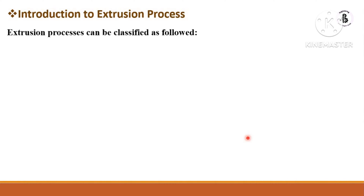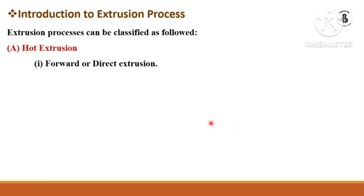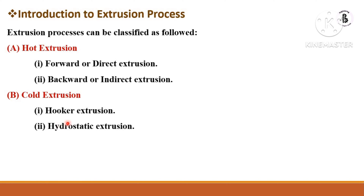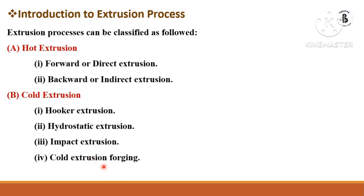The extrusion process is classified into two main types. First is hot extrusion, which is further divided into two categories: forward extrusion (also called direct extrusion) and backward extrusion (also called indirect extrusion). The second main type is cold extrusion, which includes hooker extrusion, hydrostatic extrusion, impact extrusion, and cold extrusion forging. In this video, I will only be explaining about the hot extrusion process.